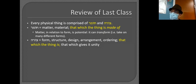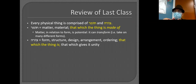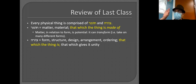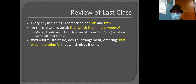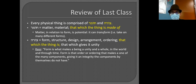With matter there's an idea of potentiality — if you have a lump of clay you can make it into different things. With a bunch of planks you can make a table, but once it's a table it can't be made into something else unless you take it apart into its matter again. Matter is potential and form is actuality. Form is the structure, design, arrangement — that which gives the thing unity. Leon Kass says form is what makes a being a unity and a whole in the world and through time.